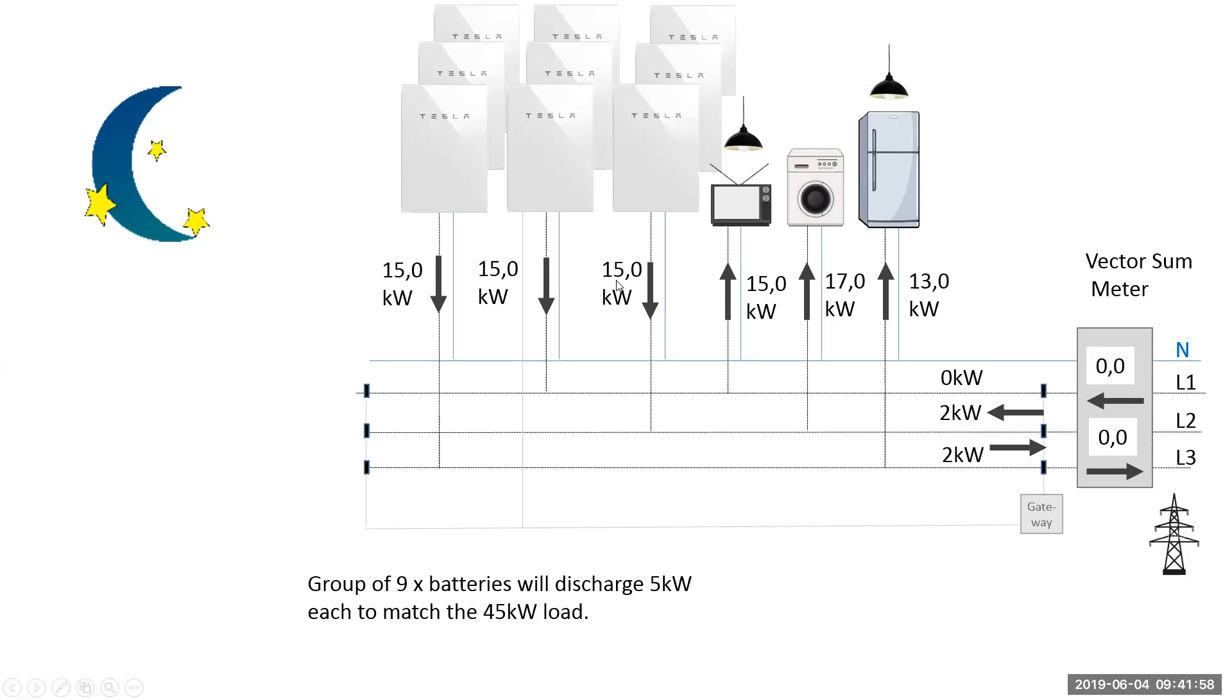Matching the 15, 15, and 15, we would have nothing happening on L1, two kilowatts coming in on L2, and two kilowatts going out on L3.